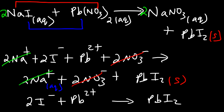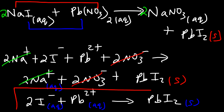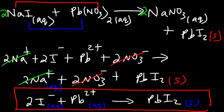Once you remove the spectator ions, what you have left is the net ionic equation. The solid product is in the solid phase and the remaining ions are in the aqueous phase. That's how you write the net ionic equation for a problem like this. Now let's work on another example for the sake of practice.